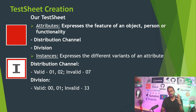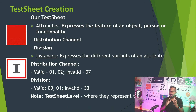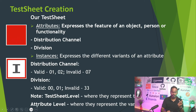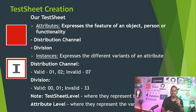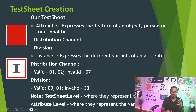Note that instances can be defined at the attribute level — for example, 01, 02, 07 for distribution channel — but instances at the test sheet level represent the individual test cases. While automating our test case, you will understand the difference between instances at the test sheet level and instances at the attribute level.